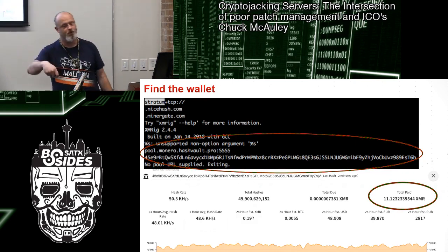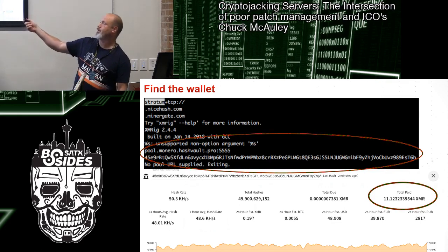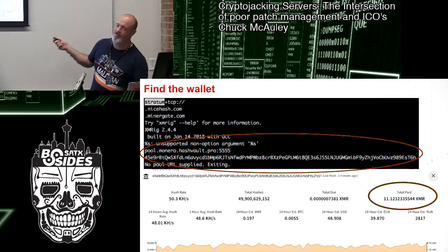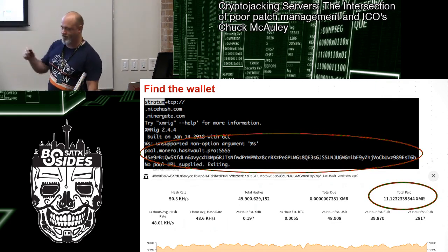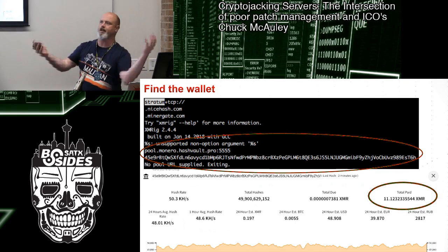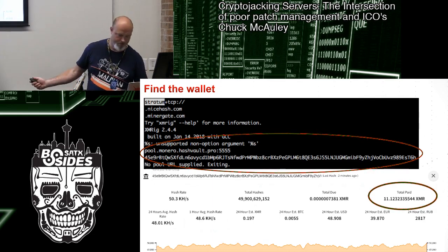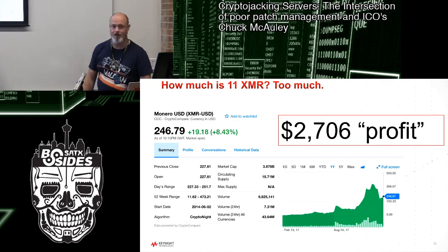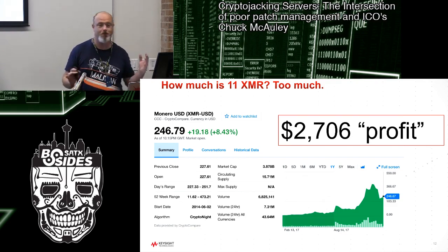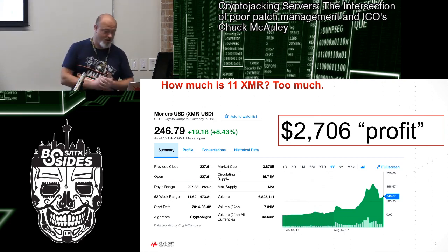Now we've found the wallet. We can go to the pool — Monero hash vault something — and find out he's dug out 11.12 XMR, which is Monero. We can see his current hash rate, his performance, everything. Unfortunately the pool later required the original email address, so I can't find out how much he's making now. But about a month or two ago, Yahoo Finance told me it was about $2,700. So he made some pretty good money using other people's computers.